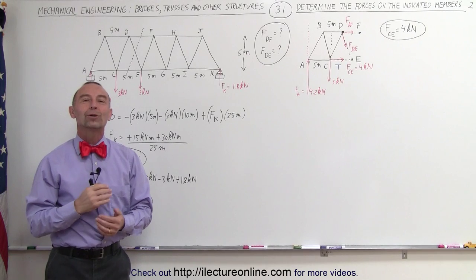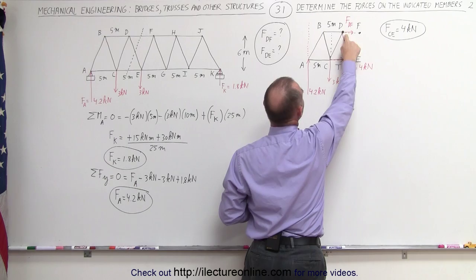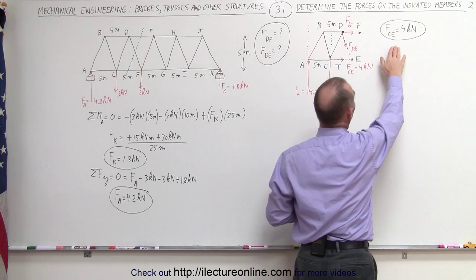Welcome to ElectronLine. In this video, we're going to tackle the next two members of this structure. We're going to try to find the force between D and F, and the force between D and E. Those are the next two we're trying to determine. In the previous video, we showed you how to find the force between C and E, which ended up being 4 kilonewtons.